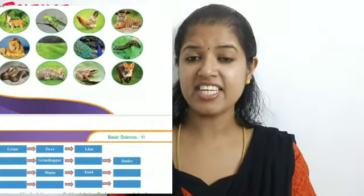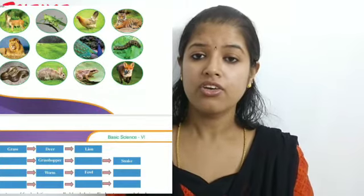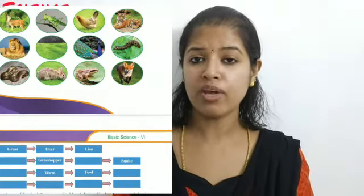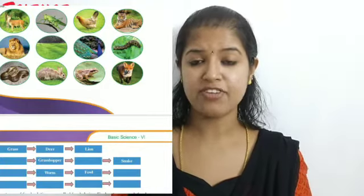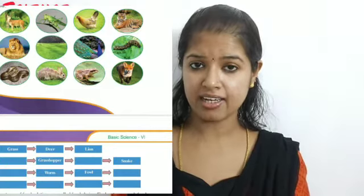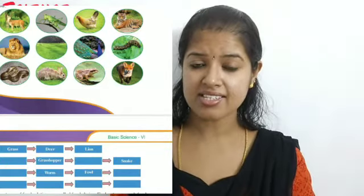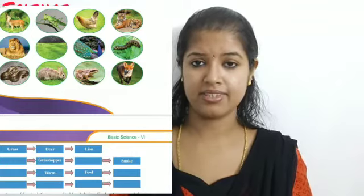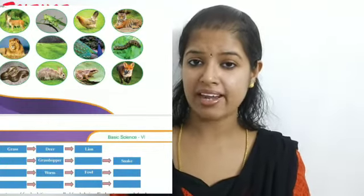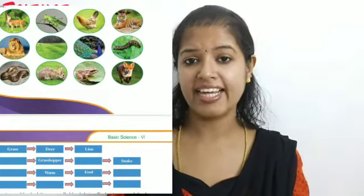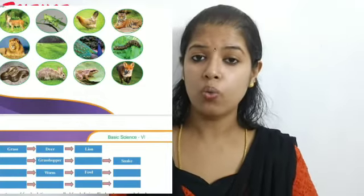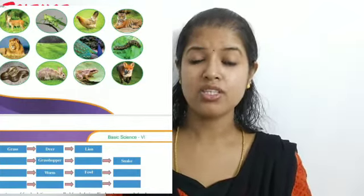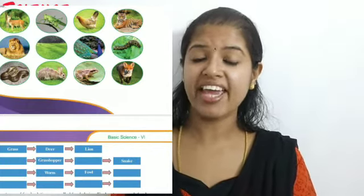There is an activity in your textbook which asks you to complete the food relationship between these animals. First: grass — deer — lion. Then: grass — grasshopper — frog — snake. Then: grass — rabbit — fox. Then: grass — worm — fowl (hen) — fox. These are the different food chains you can create from these pictures.